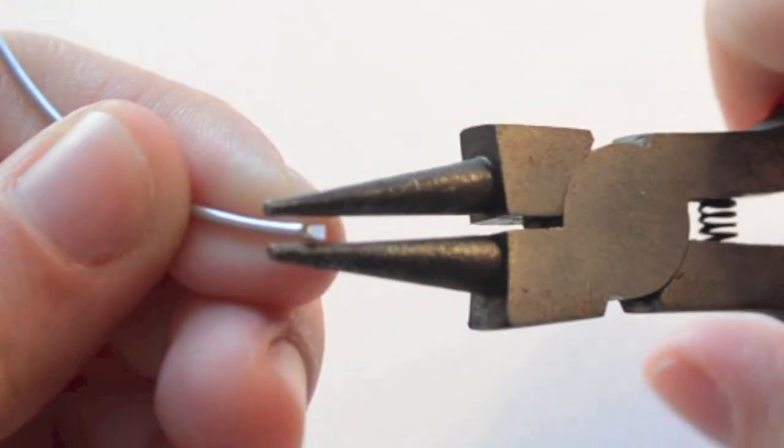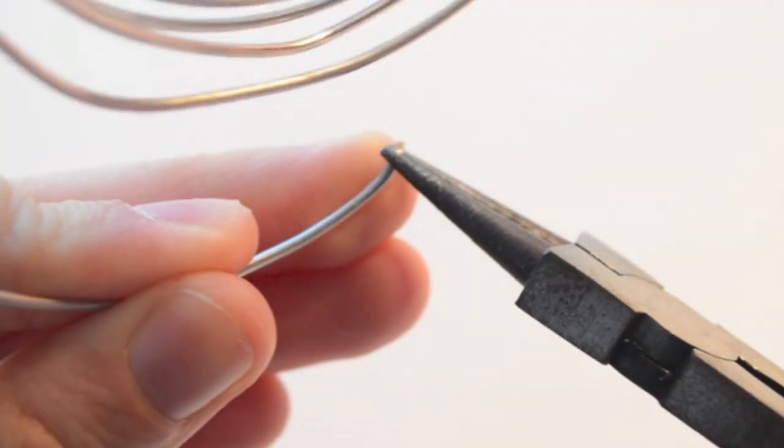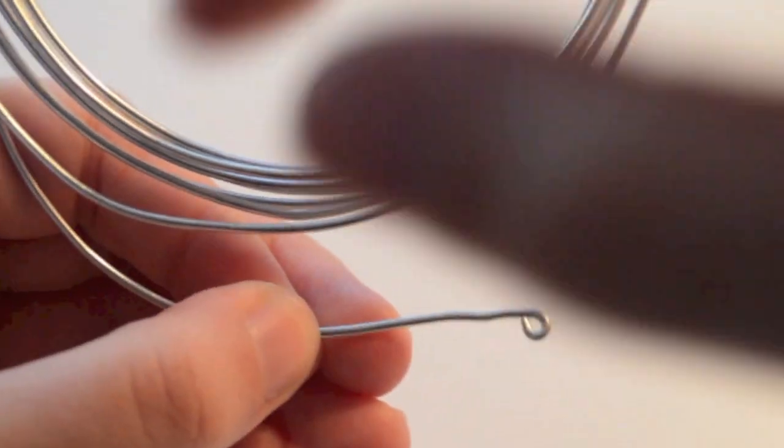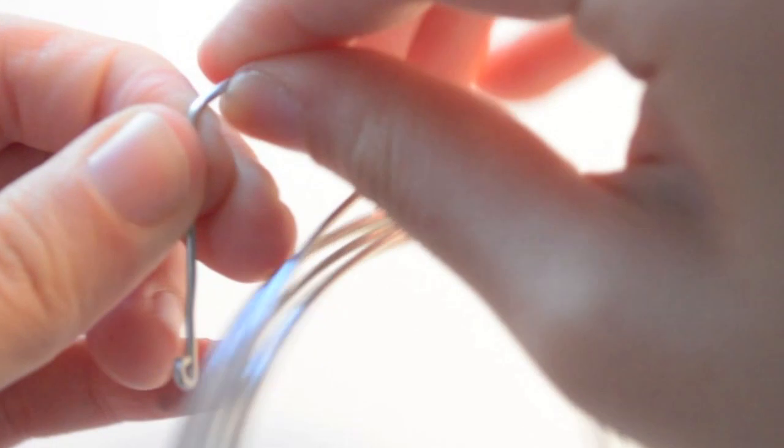You want to start off by taking the end of the wire and use the round nose pliers to make a little loop. Move down about an inch and a half and then bend it like so.